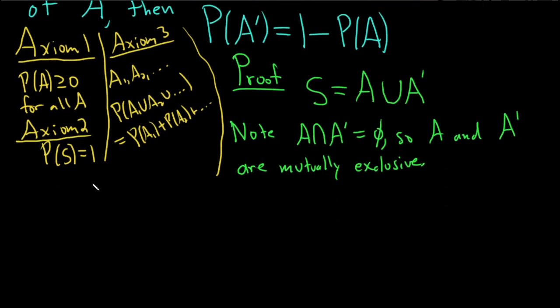All right, so now we're good to go. Now we'll just take the probability of both sides. So then, let's take the probability on the left-hand side, and that's equal to the probability on the right-hand side, so A union A prime.